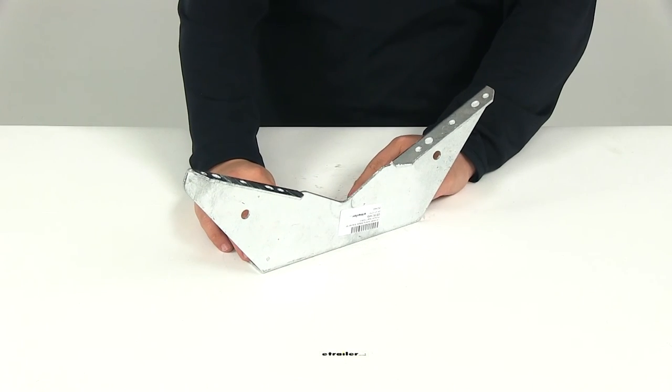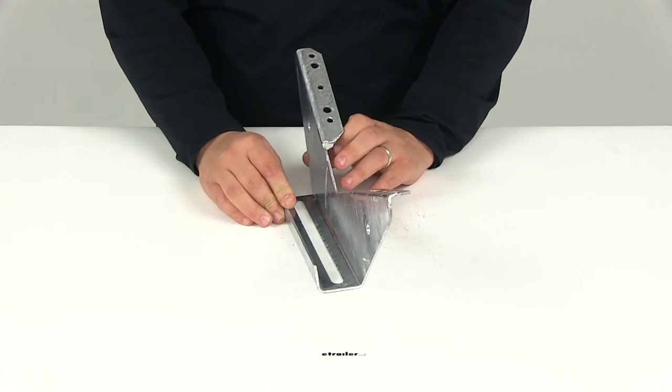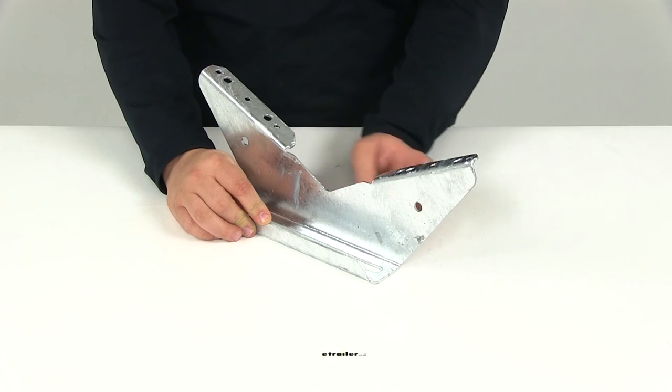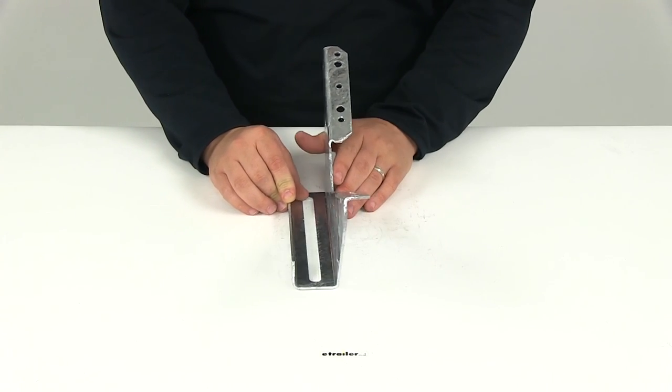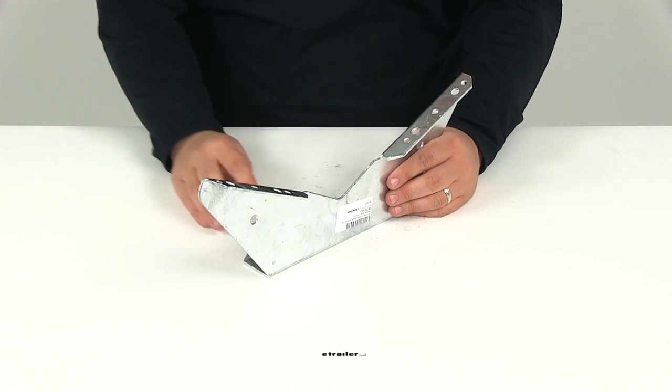That's going to do it for today's review of part number CE 26244G, the CE Smith V-Wing bolster bracket for pontoon boat trailers.